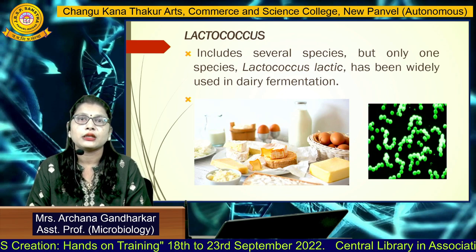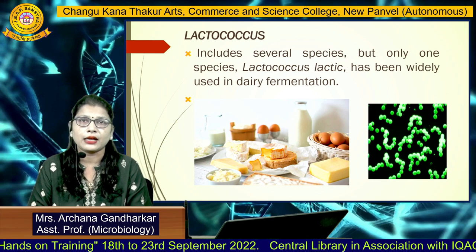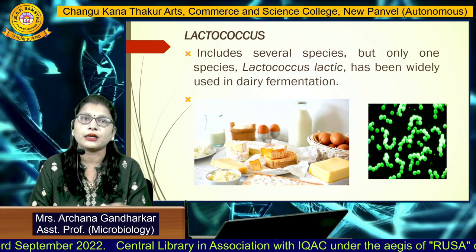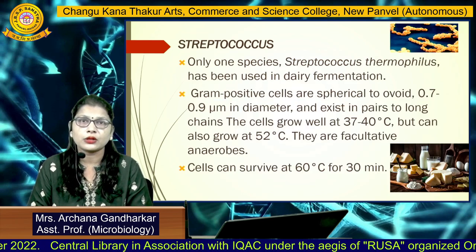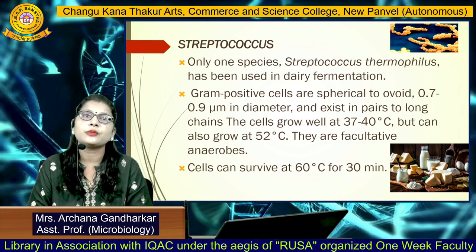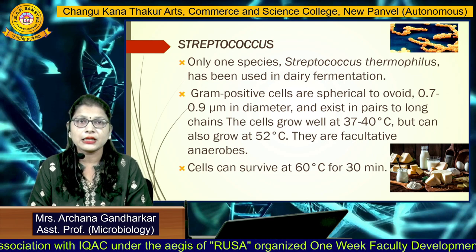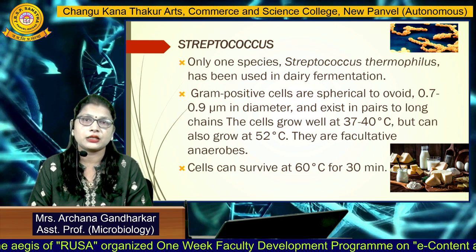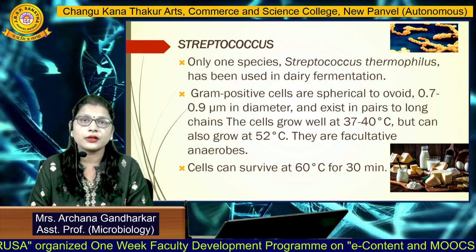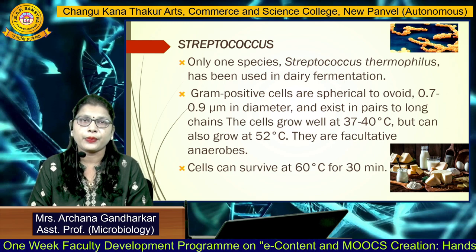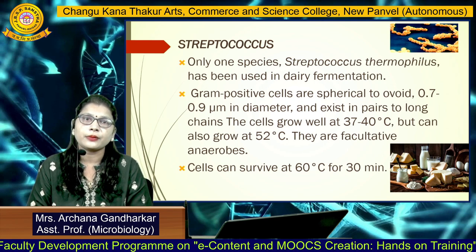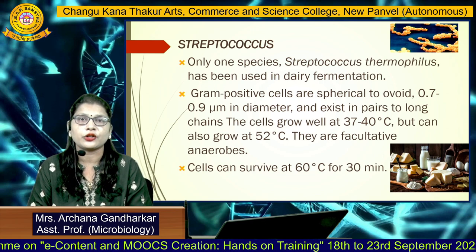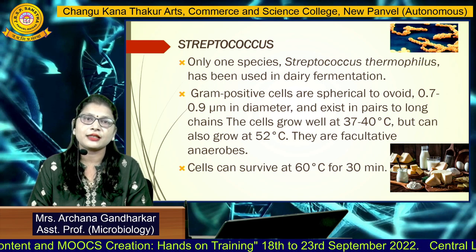The first organism is Lactococcus. Several species are available, but only Lactococcus lactis is used in dairy fermentations. The second organism is Streptococcus thermophilus, used in dairy fermentation. These organisms are gram-positive, having a spherical to ovoid shape, approximately 0.7 to 0.9 micrometers in diameter. They exist in pairs or long chains, grow at 37 to 40 degrees Celsius, some at 52 degrees Celsius, are facultative anaerobic, and can survive at 60 degrees Celsius for 30 minutes.